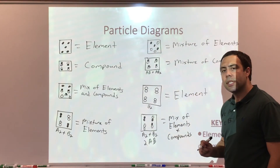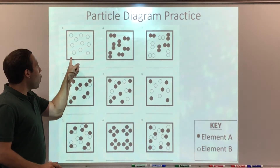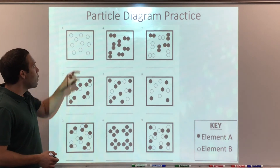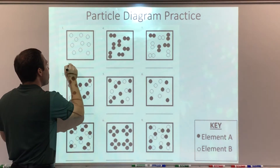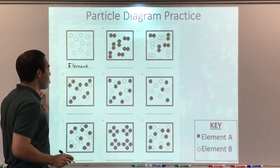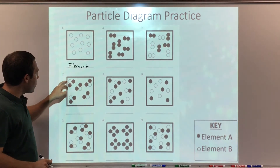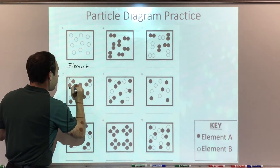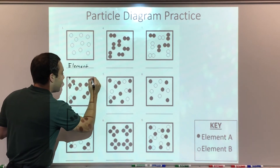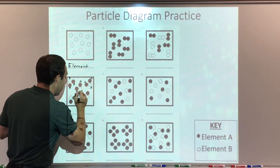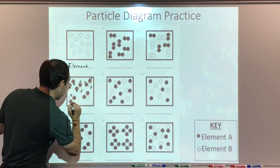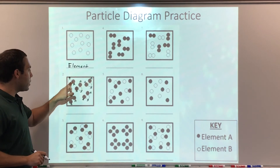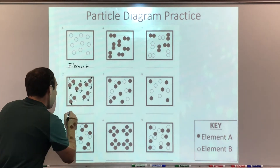Let's try some practice problems together. For practice problem number one, we have all of the same element — the open circle, element B. They're all the same, just one singular element. So for one, we write 'element.' For problem number two, we have two or more different elements chemically combined in fixed proportion. We have B and two A's, repeated consistently — all a 1B to 2A ratio. So for two, they're all the same compound.